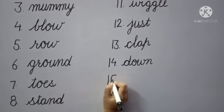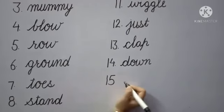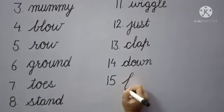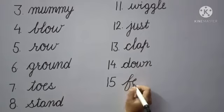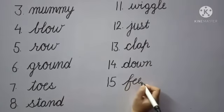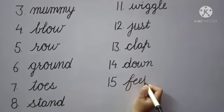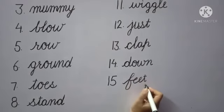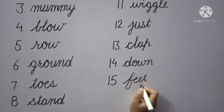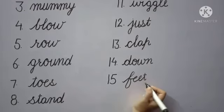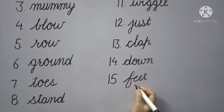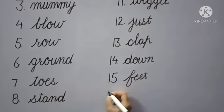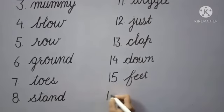Next, number 15: 'feet'. What is the spelling of feet? F-E-E-T, feet. Feet means 'paaon' (feet). What do we call paaon? Feet. F-E-E-T, feet.